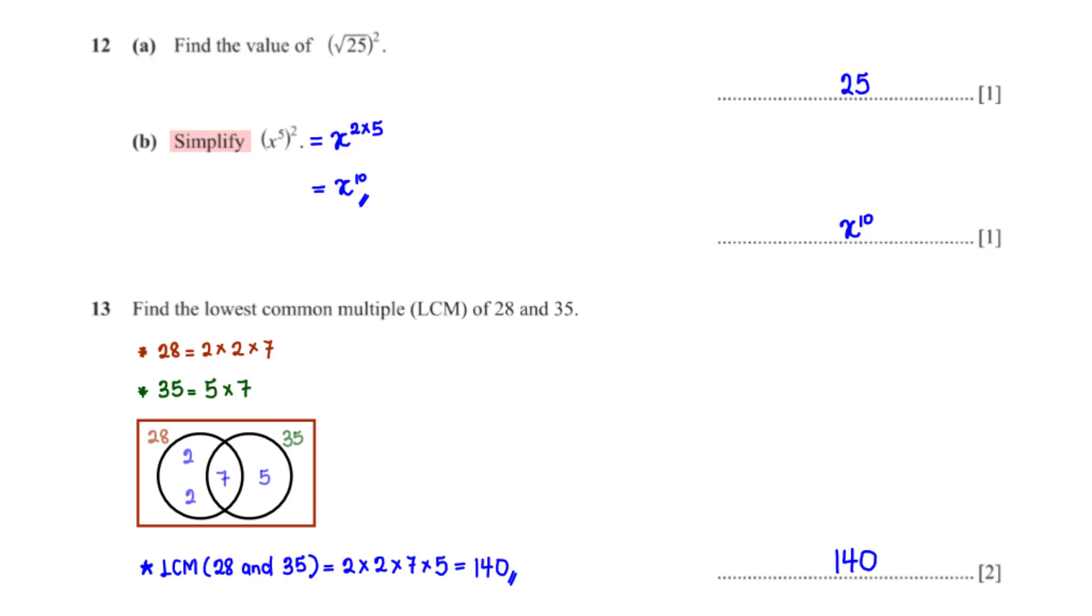Simplify x raised to the power 5 all squared. The powers of x multiply, so we have x raised to the power 2 times 5. 2 times 5 is 10, so we have x raised to the power 10.